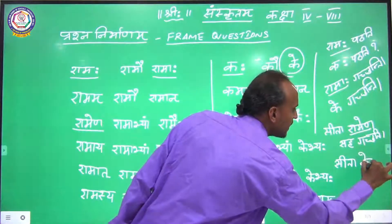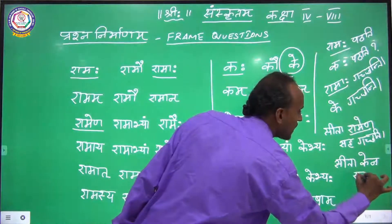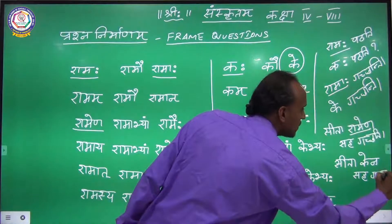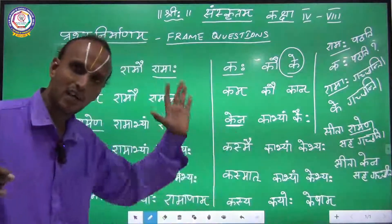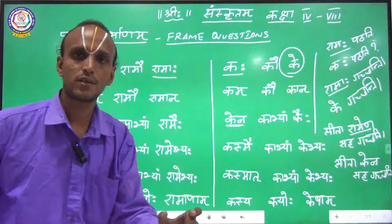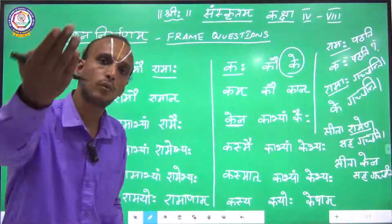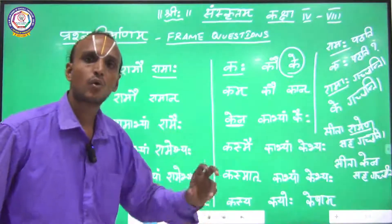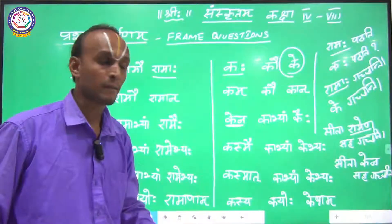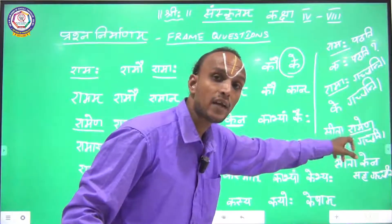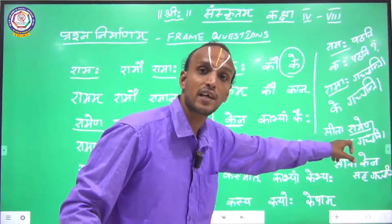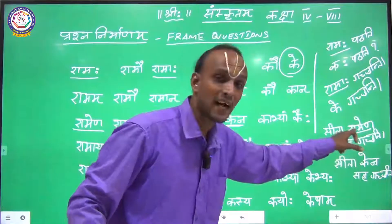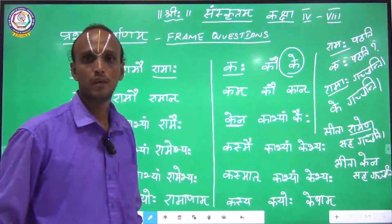Kena Saha Gachati. In English you will ask: 'Sita is going with whom?' So for the sentence Sita Ramena Saha Gachati, you have to write Kena, because the underlined word is Ramena.